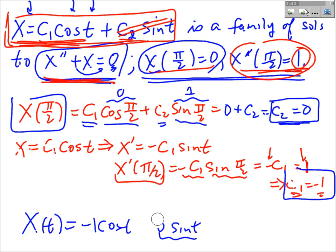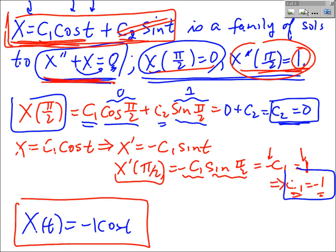This family of solutions is called a two-parameter family of solutions because there are two unknowns, c1 and c2. One unknown gives a one-parameter family of solutions, two unknowns give a two-parameter family, and so on.